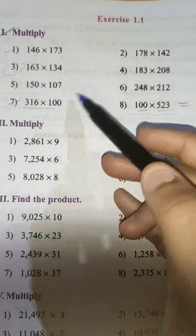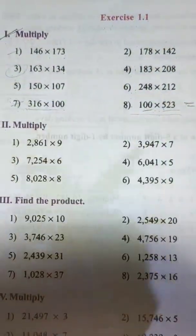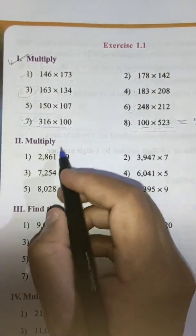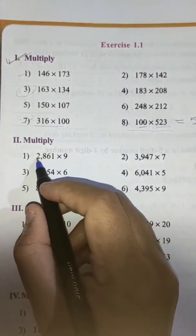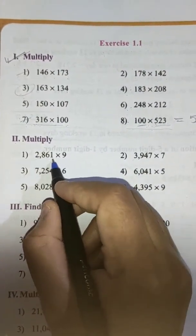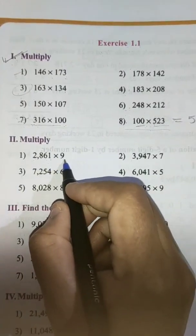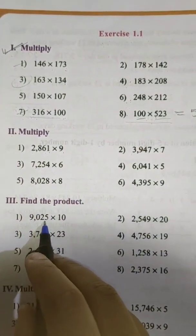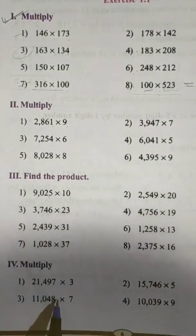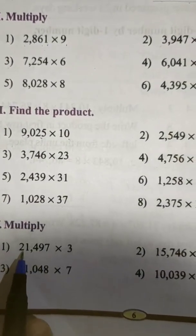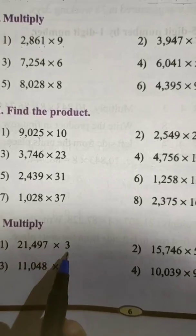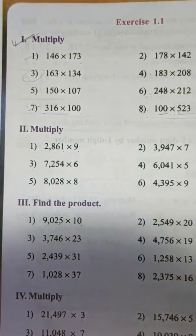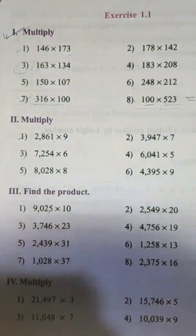Here you can see we have done the multiplication of a three-digit number by a three-digit number. Here we have multiplication of a four-digit number by a one-digit number. Next, in the third main, the multiplication of a four-digit number by a two-digit number. And here, the multiplication of a five-digit number by a one-digit number. So let's do the second main first.